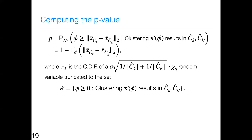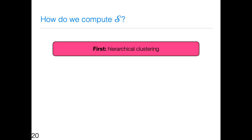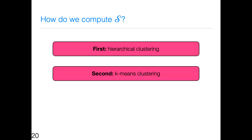My p-value is just the CDF of a chi distribution with q degrees of freedom, truncated to a set S — the set of phi such that clustering x-prime-of-phi gives me c-hat-k and c-hat-k-prime. The hard part is computing this set S analytically. Everything I've talked about so far applies for any type of clustering, only assuming multivariate normality. But starting at this moment, to compute the set S, we need to be specific about what type of clustering we're doing. Today I'll briefly talk about two types: hierarchical clustering and k-means clustering.